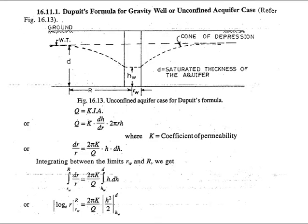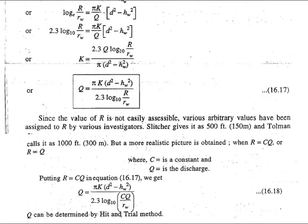We have to do the same thing: discharge Q equals K times I times A, where I is hydraulic gradient equals dh over dr, K is coefficient of permeability. We will now integrate from rw to R and putting down the limits we will get this formula: discharge Q equals pi K times (d squared minus hw squared) over 2.3 log10 R over rw.